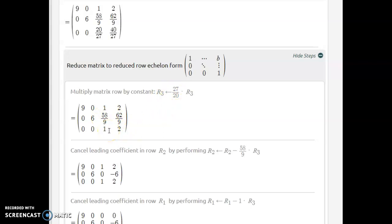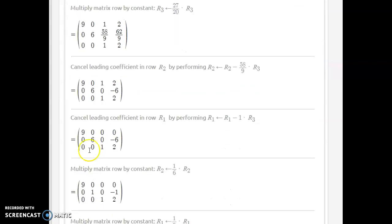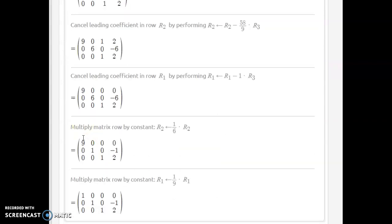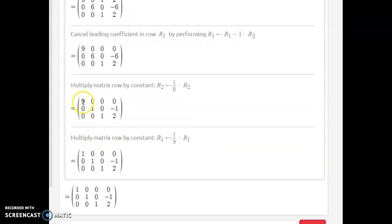Actually it doesn't do that, never mind. It multiplies the last one by 27 over 20. I'm sorry, here it multiplies the last row by negative 58 over 9 in order to get the zero here. It continues on like that and then at the last step it divides to get rid of the 9 and the 6. You divide the middle row by 6 and the top row by 9 and you get a nice solution in row echelon form.